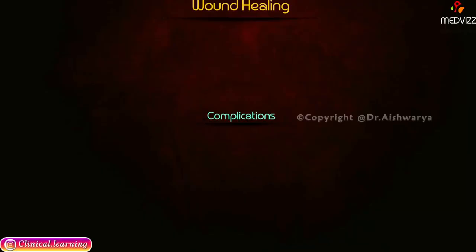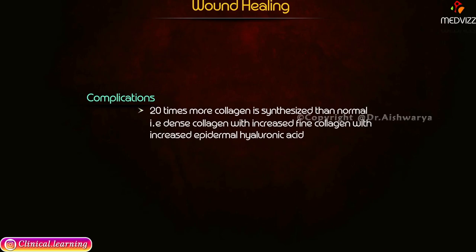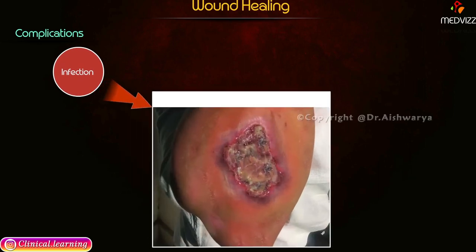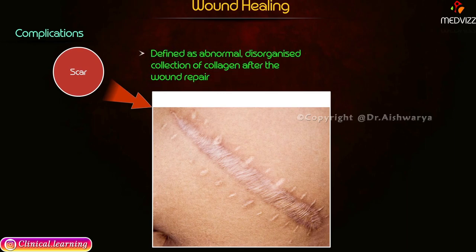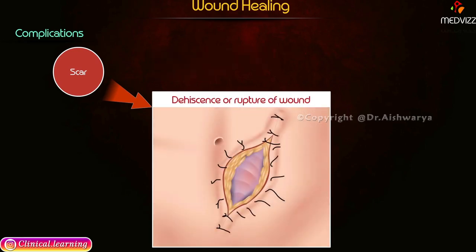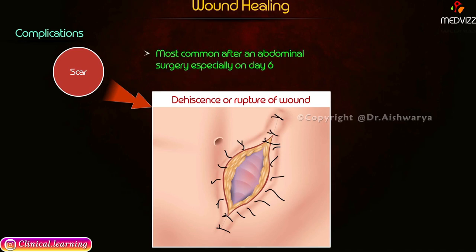Complications of wound healing: in keloid, 20 times more collagen is synthesized than normal — dense collagen with increased fine collagen and increased epidermal hyaluronic acid. This wound healing process can be complicated by infection and disfigurement by means of scar. A scar is defined as an abnormal, disorganized collection of collagen after wound repair. Dehiscence or rupture of the wound is most common after abdominal surgery, especially on day six.